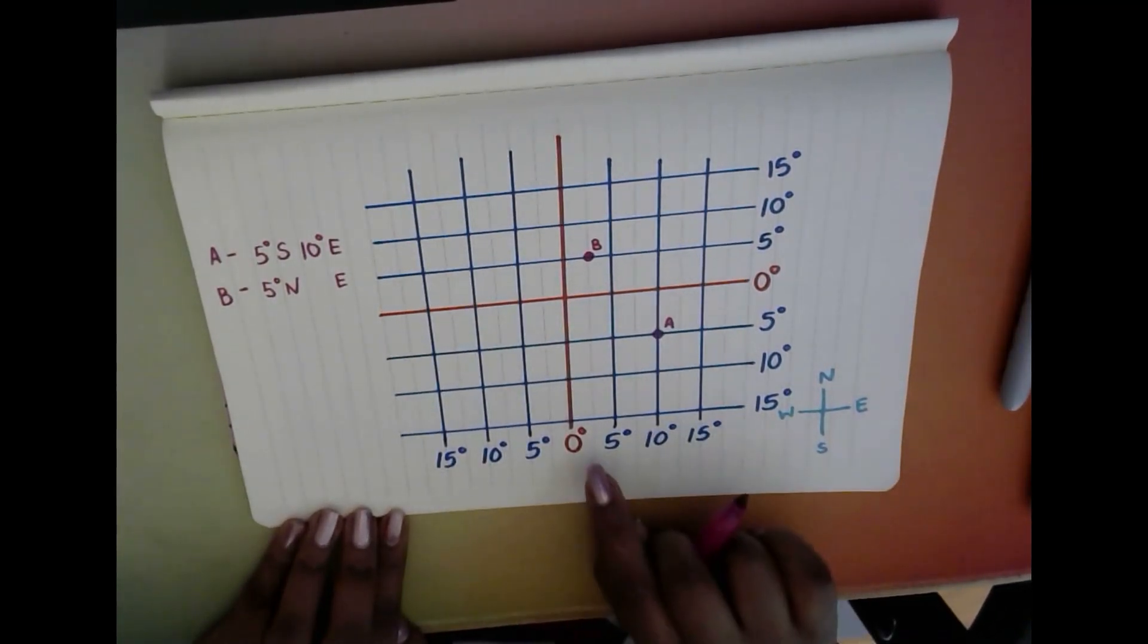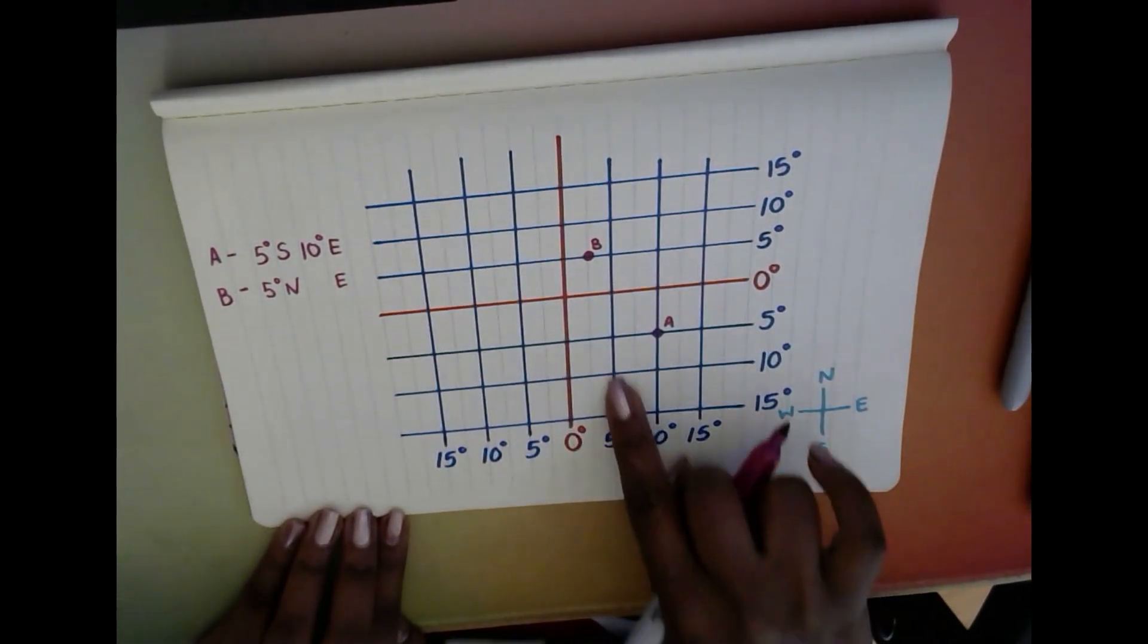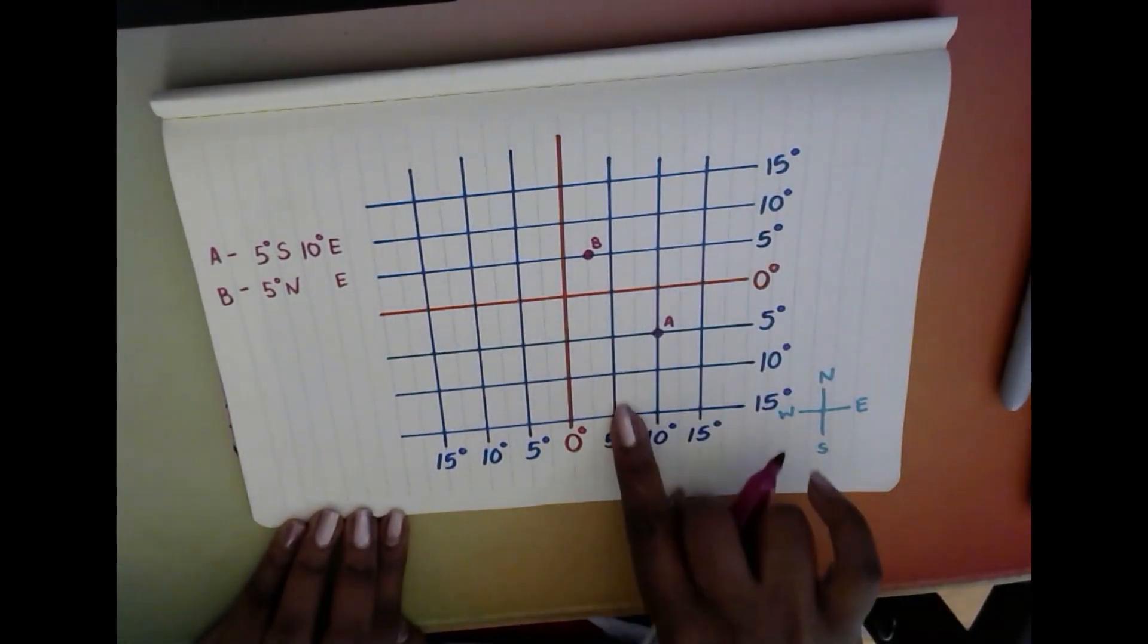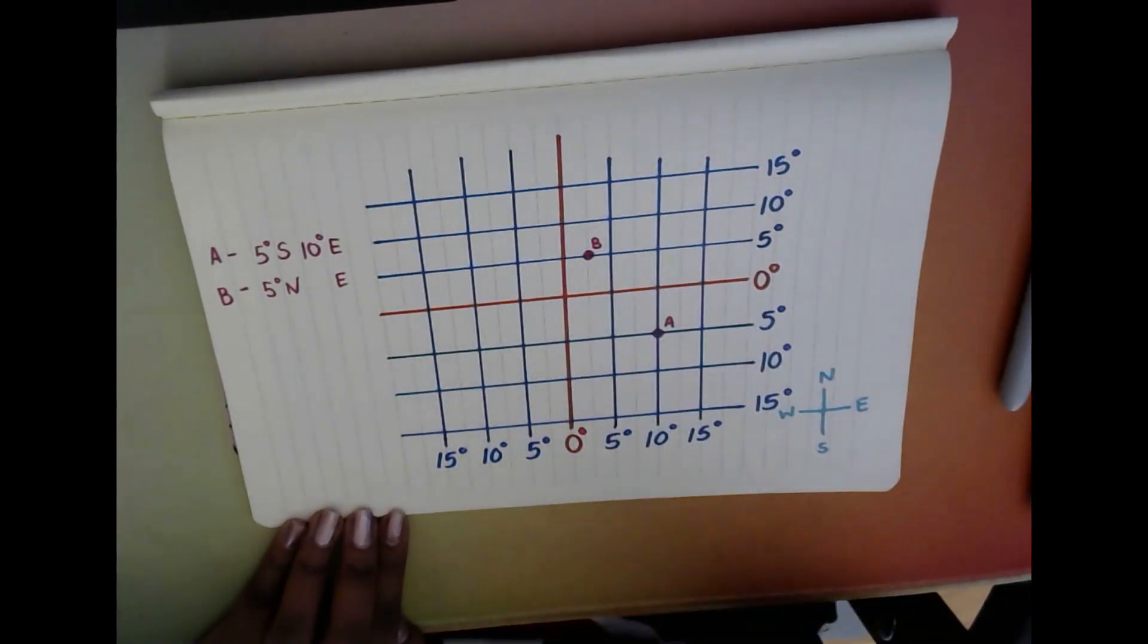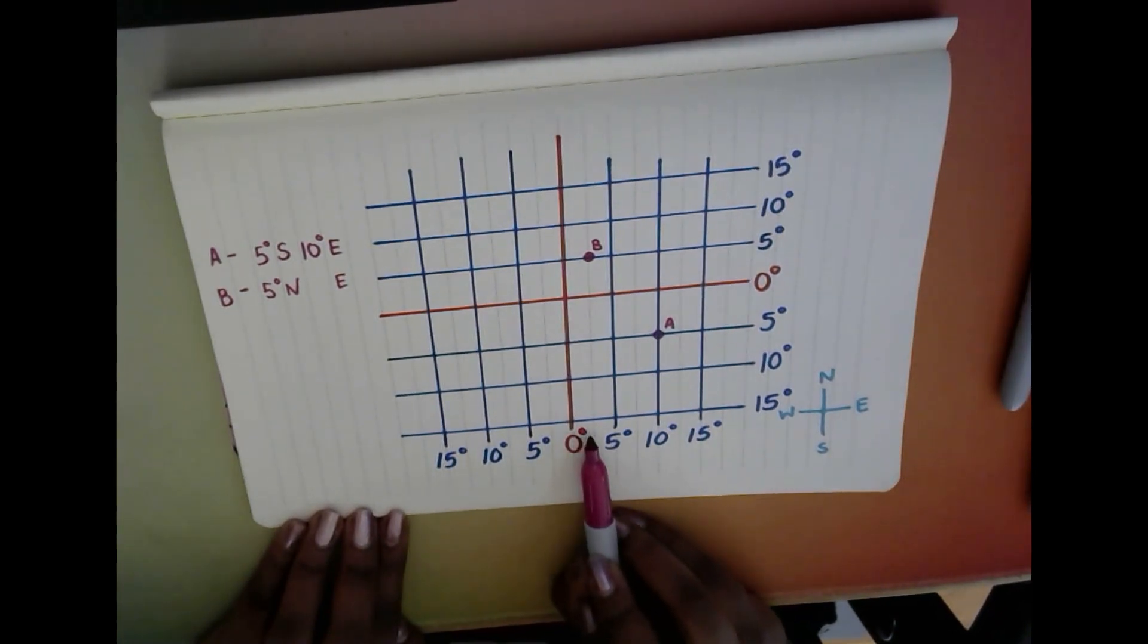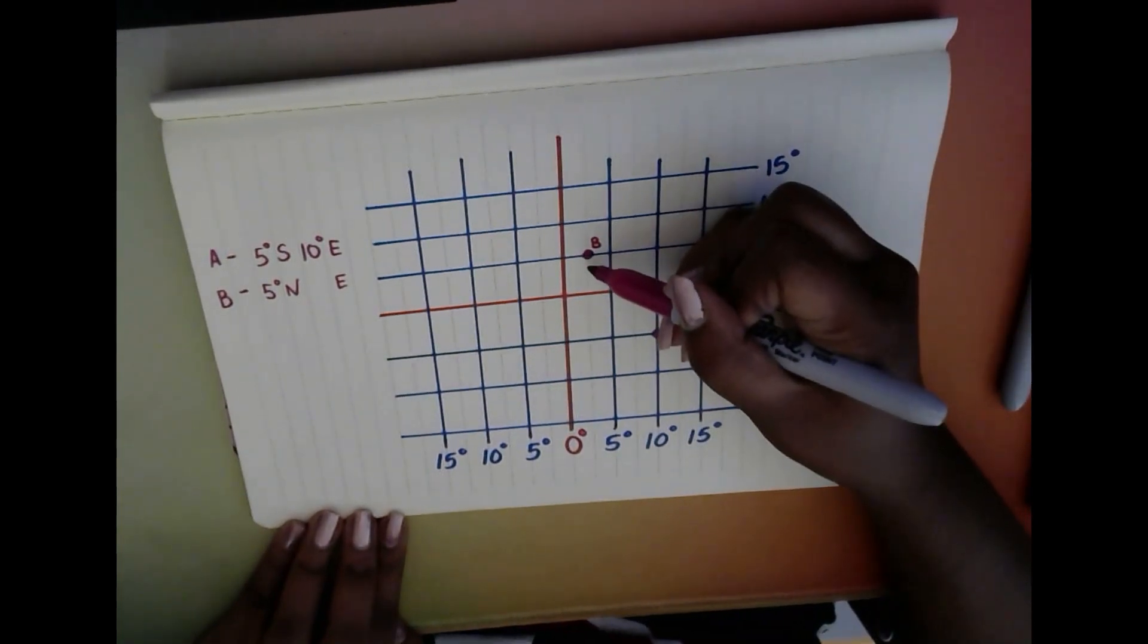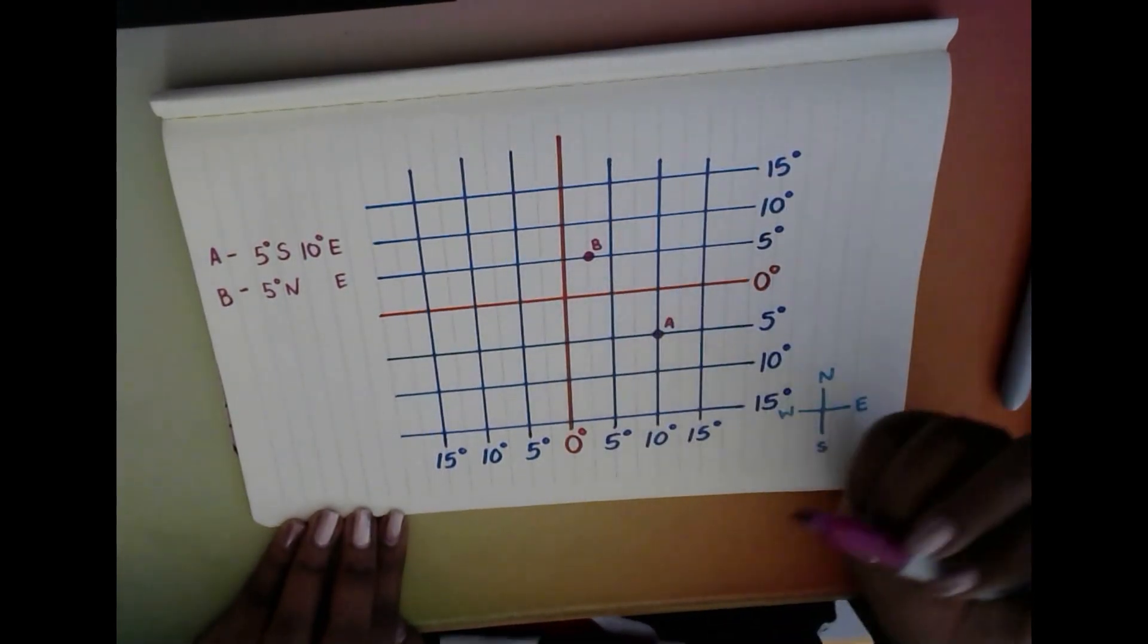But now here comes the tricky bit. It's not on the zero degree line of longitude and it's not on the five degree line of longitude—it's kind of somewhere in the middle. And if you might have guessed, there are four other numbers between this. So it's zero, and there's one, two, three, four, and then five. So we're going to have a look. We can see it's pretty much right in the middle, so I'm going to call this three degrees east.